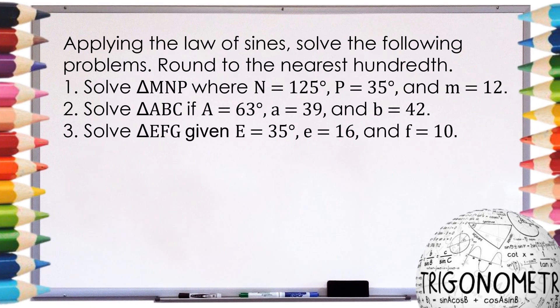On the first learning task, you are going to apply the Law of Sine sign to solve the following problems. Round to the nearest hundredths. The first thing that we are going to do is to draw these triangles and identify their missing parts. I'm going to solve number 1, including the illustration and the missing parts — the angles and the sides. I'm just going to illustrate for numbers 2 and 3, and it's up to you to answer the other numbers. So let's start.